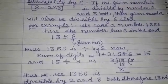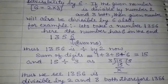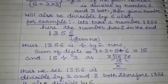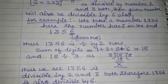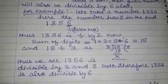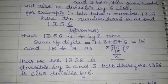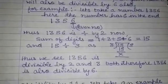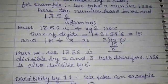Now we will see if the same number is divisible by 3. For this we will find the sum of the digits of the given number. Here the sum is 1 + 3 + 5 + 6 = 15. And 15 is a multiple of 3. So we can say that 1356 is also divisible by 3. Since 1356 is divisible by both 2 and 3, therefore 1356 is also divisible by 6.